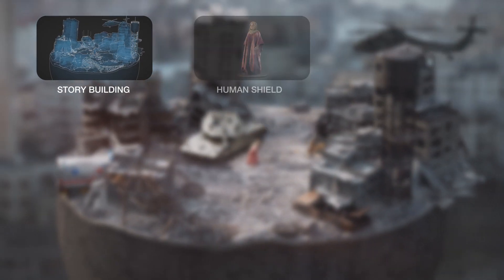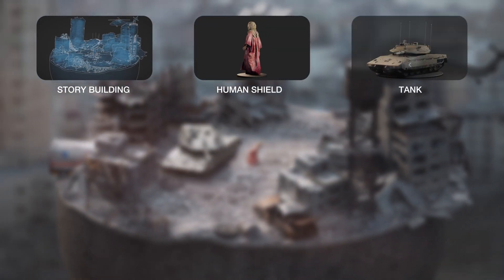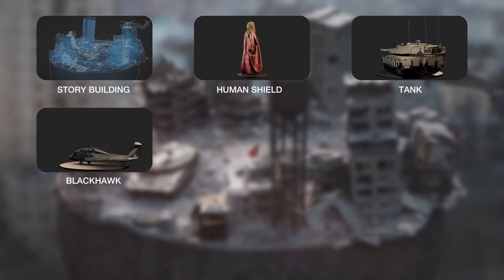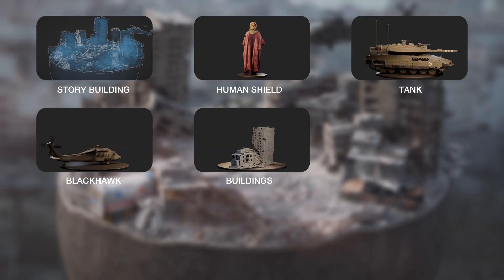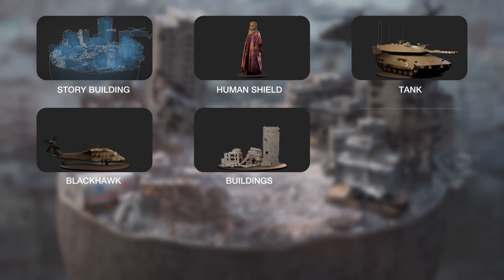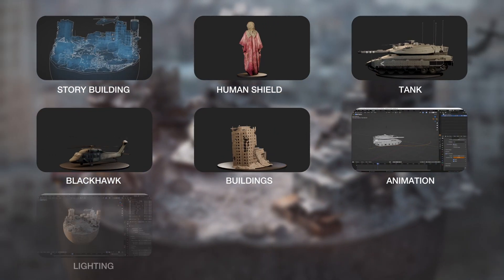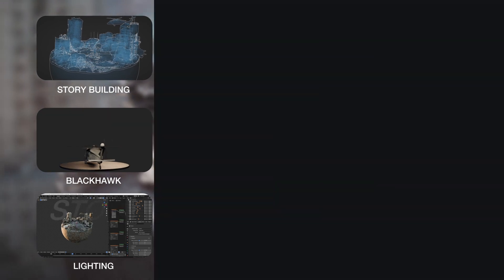To successfully carry this out, we'll first construct a story. We'll then need some human shields, powerful tanks, Blackhawk helicopters, hospitals and residential buildings. We'll then go over animation using curves and noise, lighting, compositing and sound design.